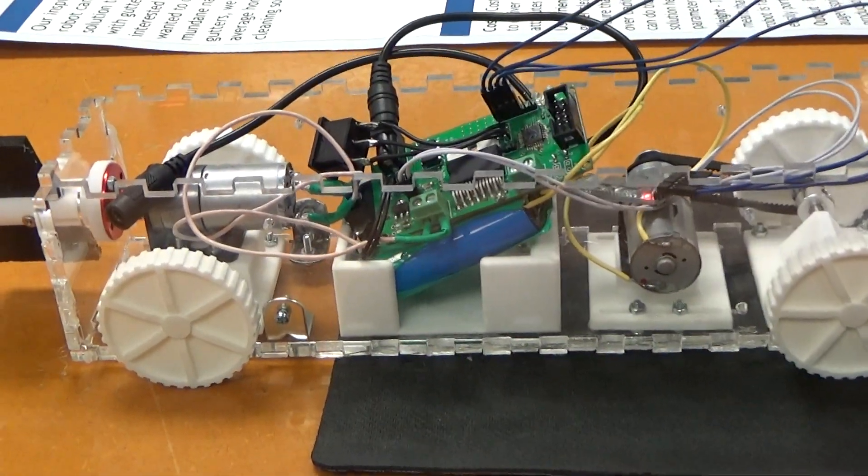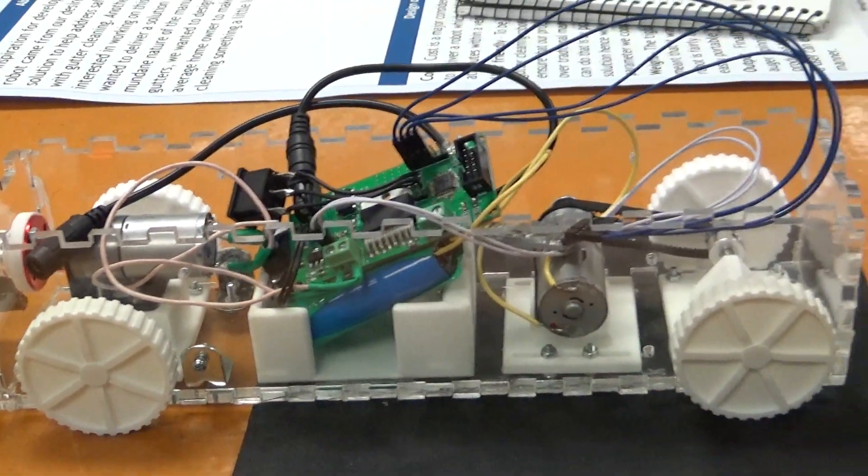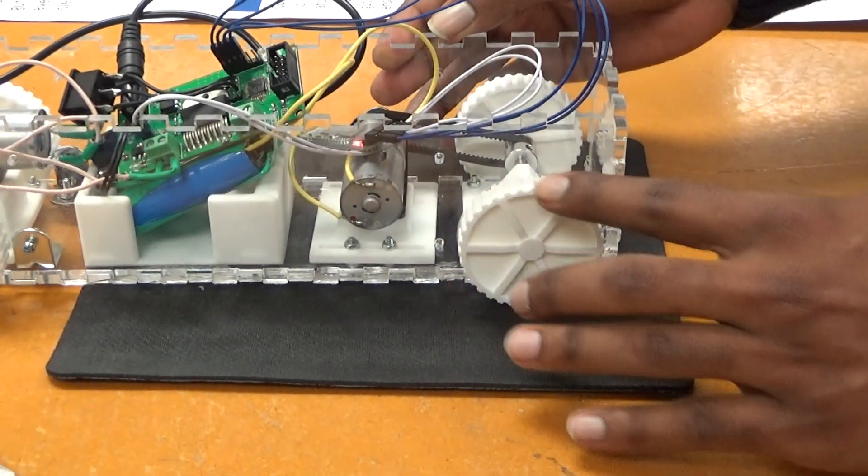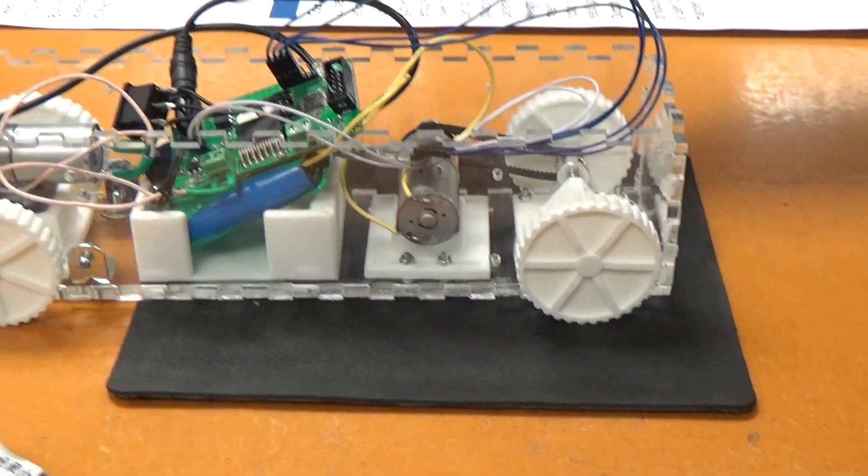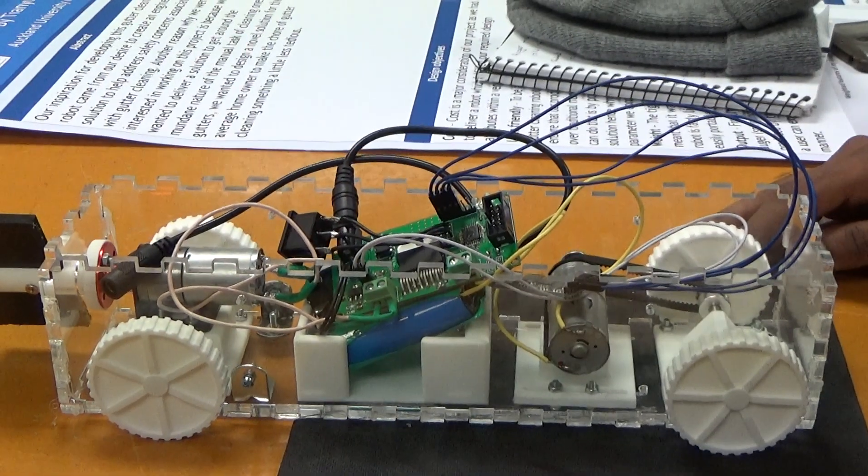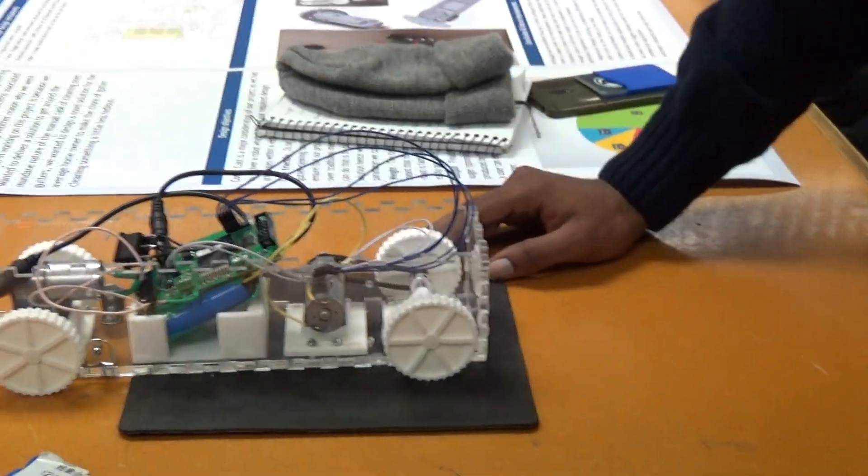Are these done on the laser cutter? Yeah. So the outer body of the frame is laser cut, and the more intricate design parts such as the wheels and the motor mounts, wheel mounts, and the PCB and battery holder were 3D printed. Thank you very much.